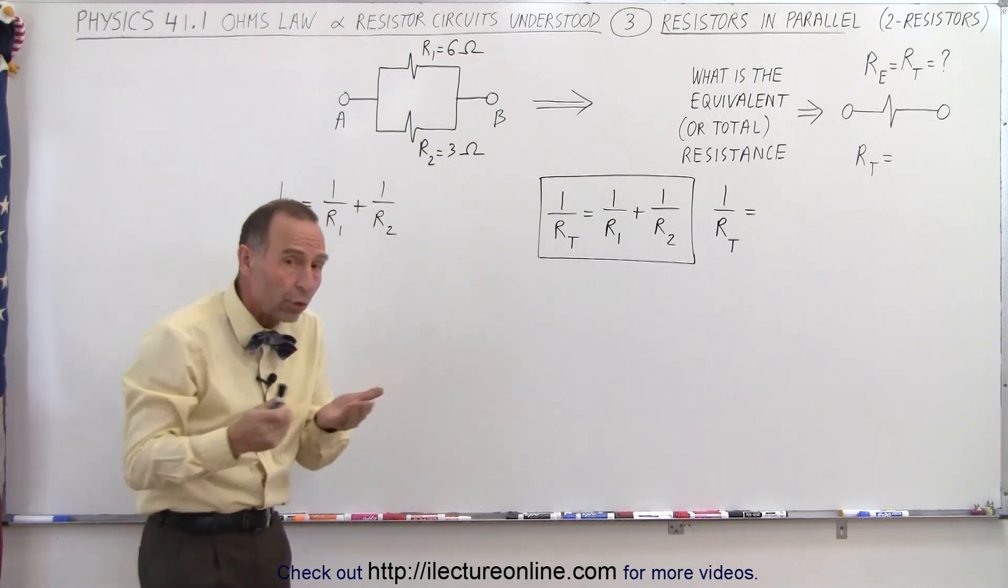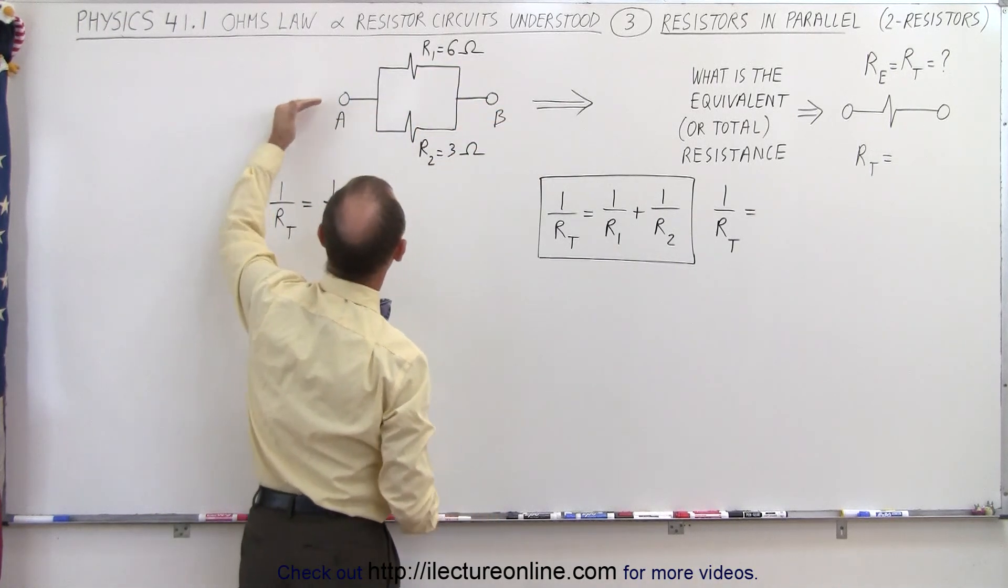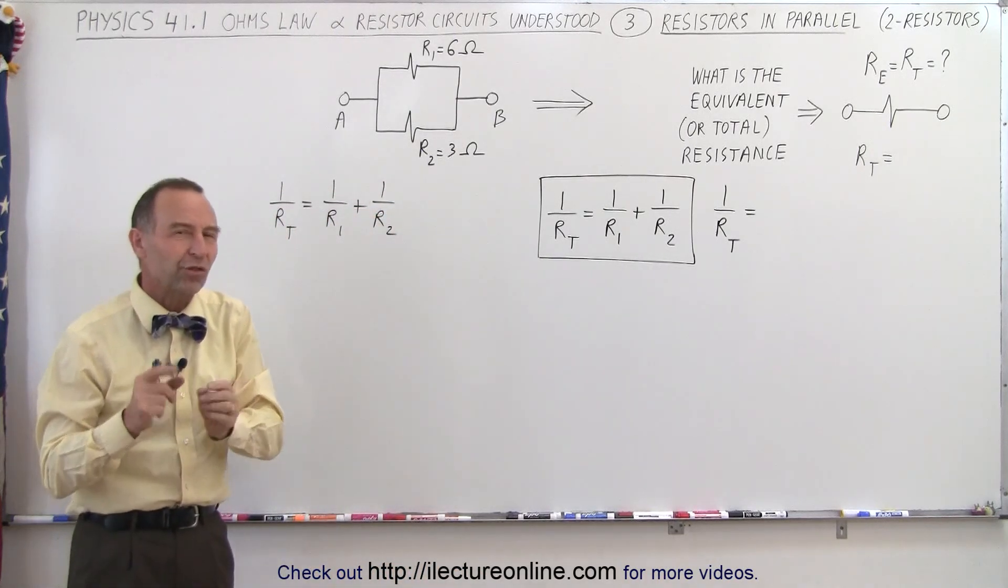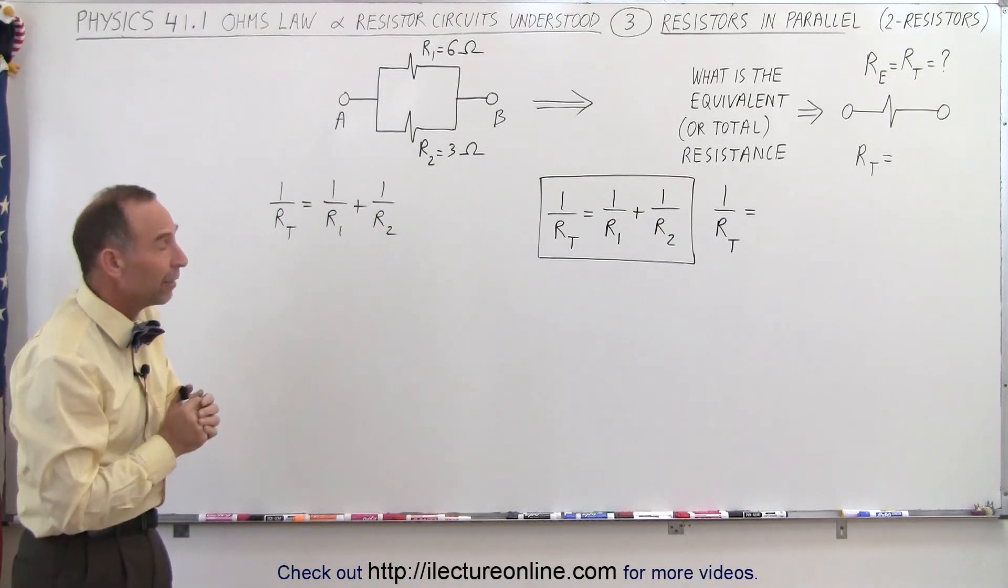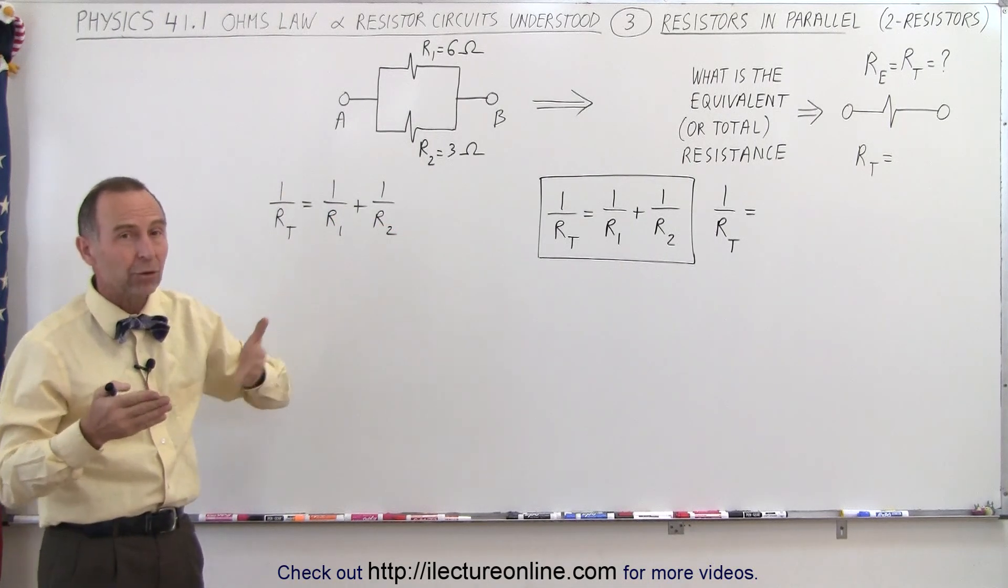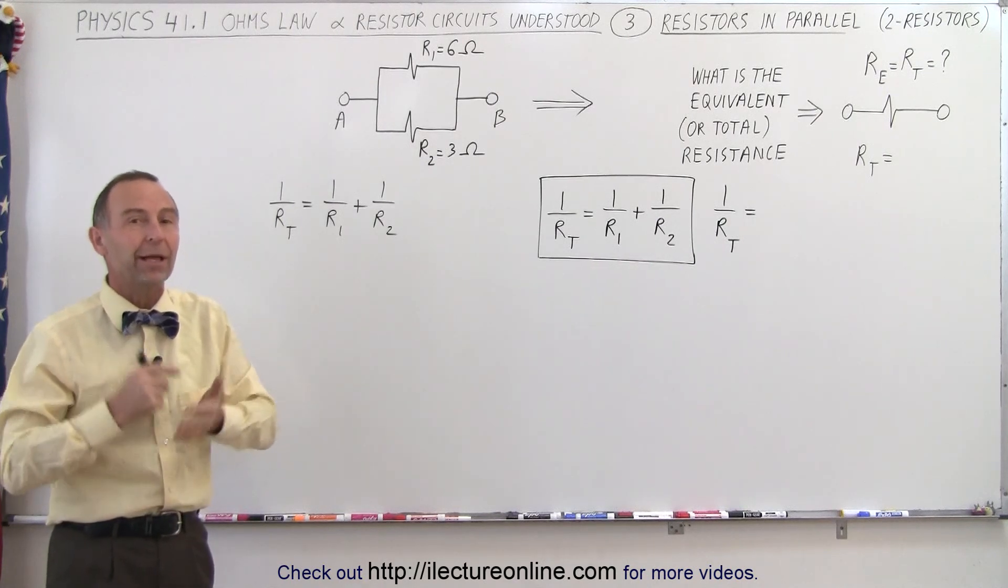Notice that the current has a choice. The current can either go to the 6 ohm resistor or it can come down here and go to the 3 ohm resistor. It has more than one path. And so when there's more than one path to go from A to B, then those components making those multiple paths are in parallel.